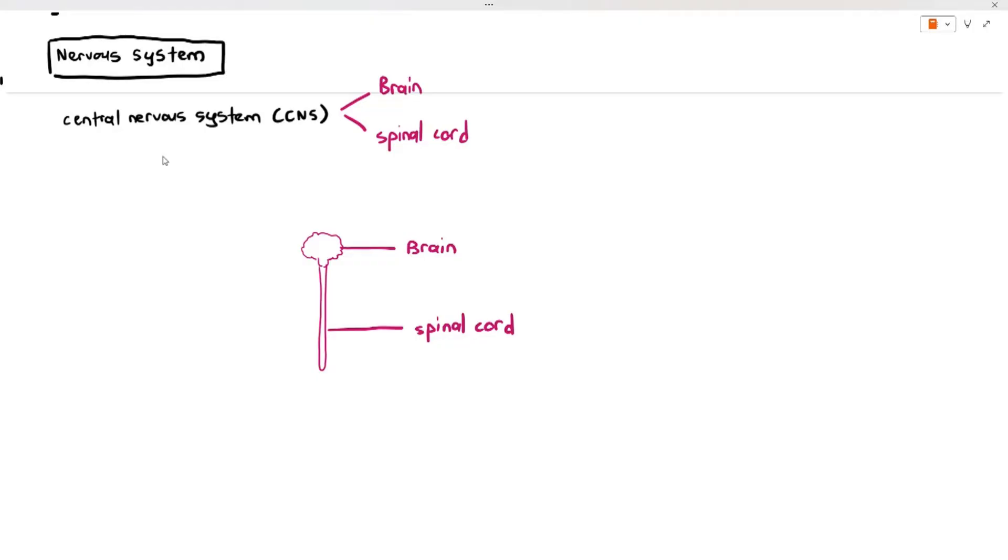You cannot directly touch your brain or spinal cord because they are protected by bones. That's a good thing because you don't want them to be directly exposed to pressure.